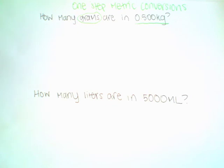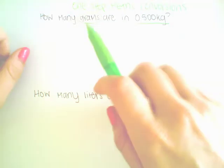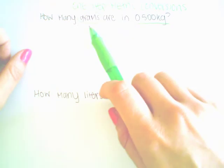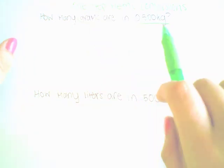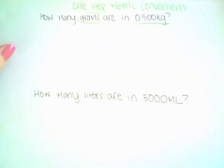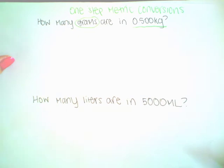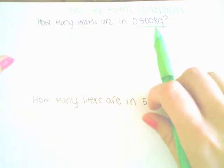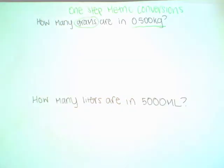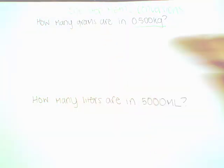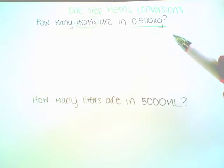If it were a two-step metric conversion problem, both units — the one I was asking for and the one that's given — would both have a prefix. The prefix in this one is kilo. Kilo means one thousand, so we need one thousand base units to make up one kilogram.